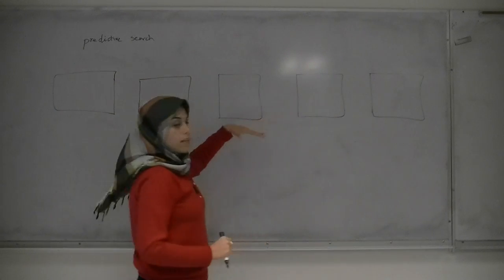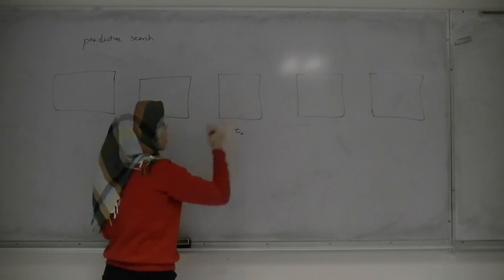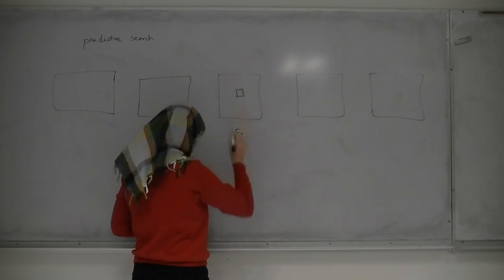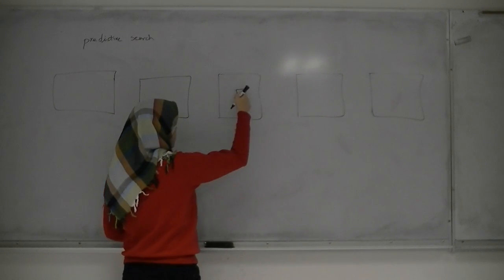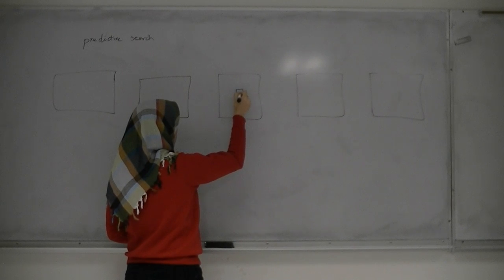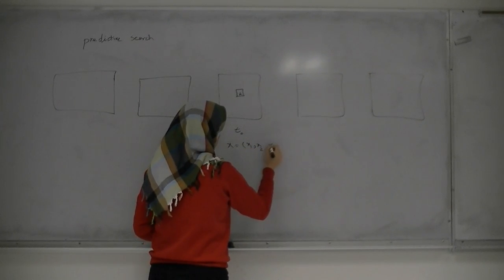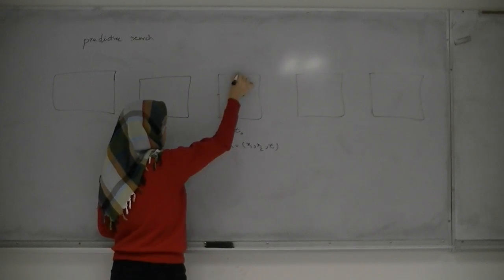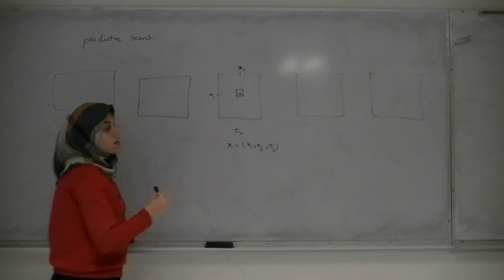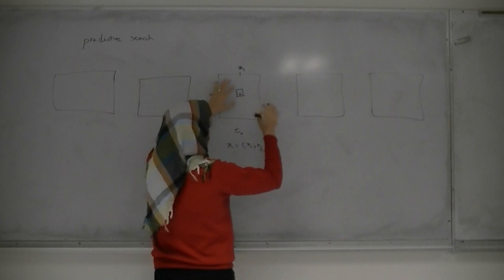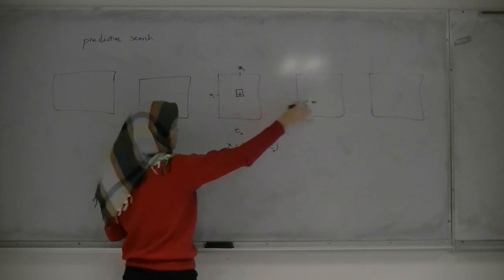Each of the instruments has a frame. For example, you start from here and you want to find this block. We call the position x, where x is equal to x1, x2, and t. We call x1, x2 the spatial coordinates and t is t0 here. I want to find the similar blocks for this block in the other frames.